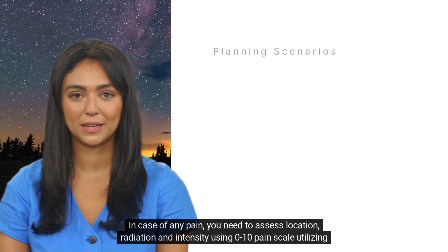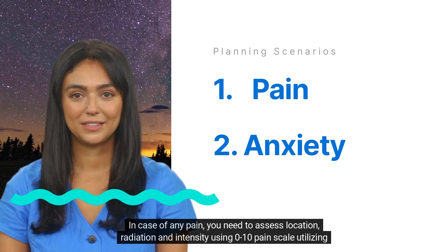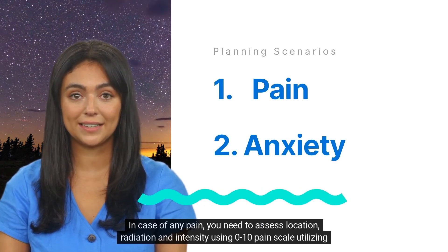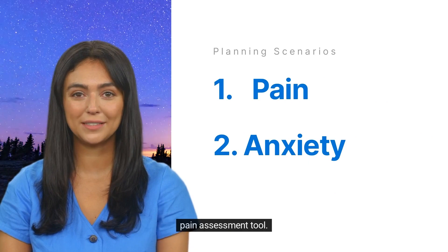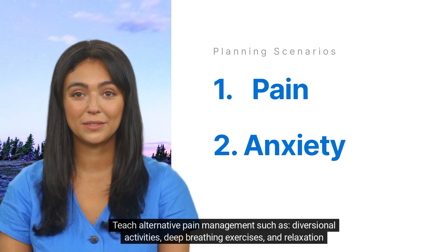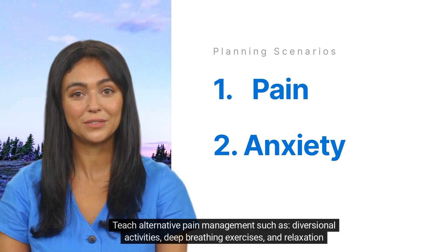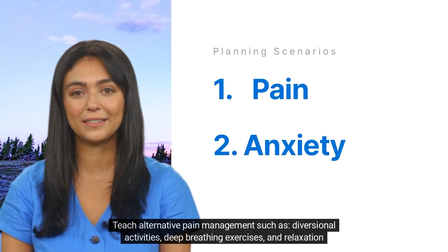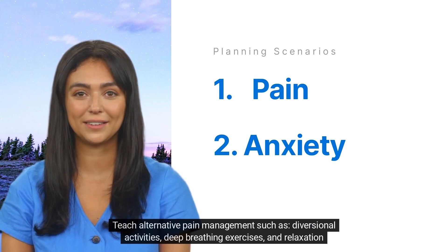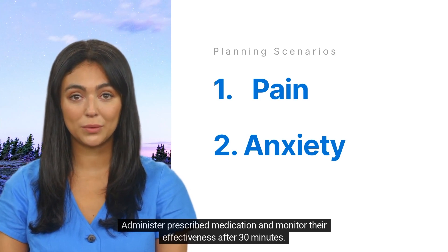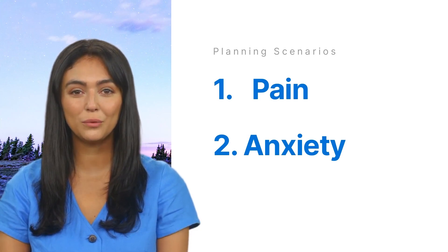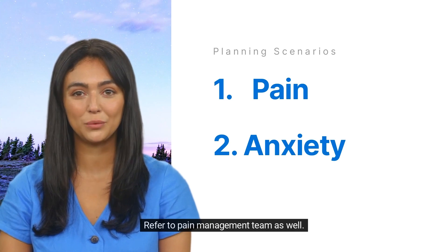Now we will see some commonly written nursing problems and what you should be careful about when writing those interventions. In case of any pain, you need to assess location, radiation, and intensity using a 0–10 pain scale, utilizing a pain assessment tool. Teach alternative pain management such as diversional activities, deep breathing exercises, and relaxation techniques. Administer prescribed medication and monitor effectiveness after 30 minutes. Refer to the pain management team, and if the patient is for surgery, refer to the surgical team as well.